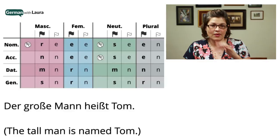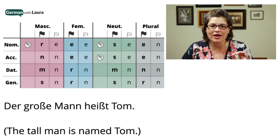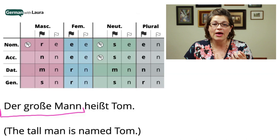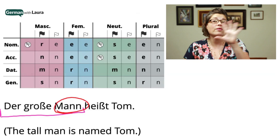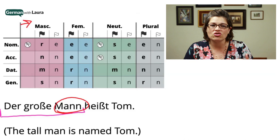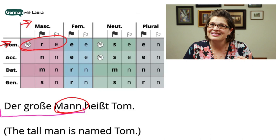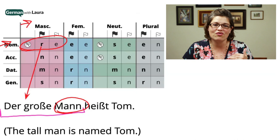Let's look at those three examples from the beginning through the lens of the all-in-one declensions chart. In 'Der große Mann heißt Tom,' 'der große Mann' is in the nominative case — it's the subject. We know 'Mann' is a masculine noun, so in the all-in-one declension chart, the intersection is where masculine meets nominative. And you can see that reflected in the declensions on the words in front of 'Mann': there's the R and there's the E.